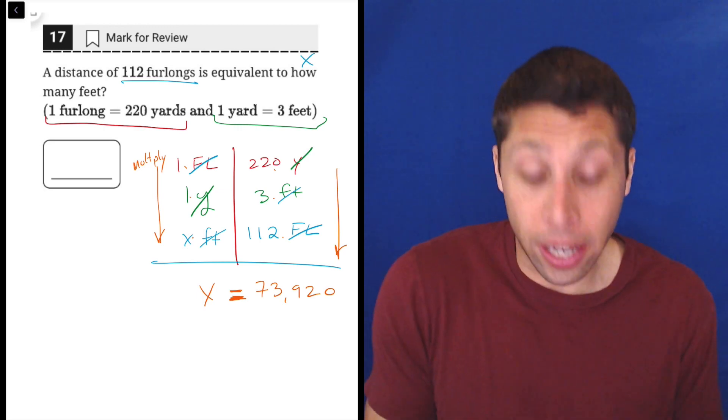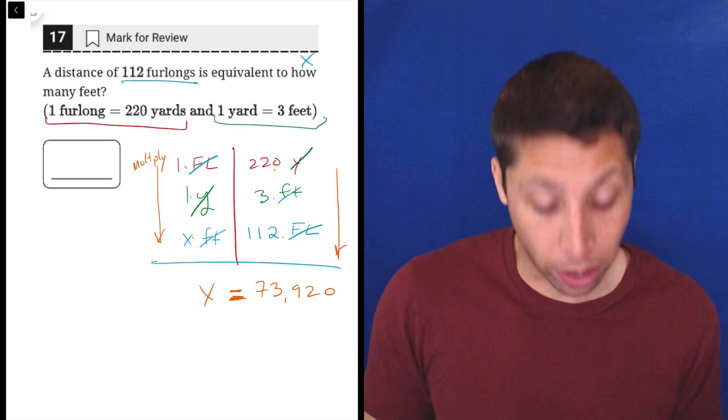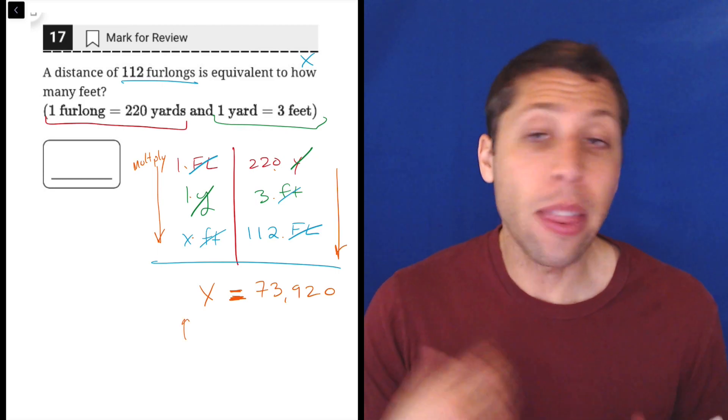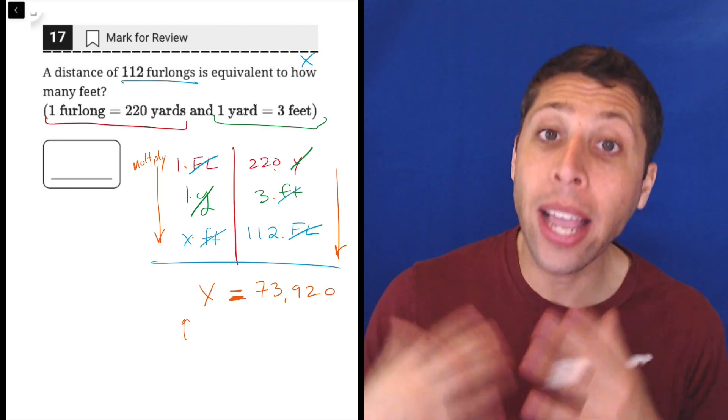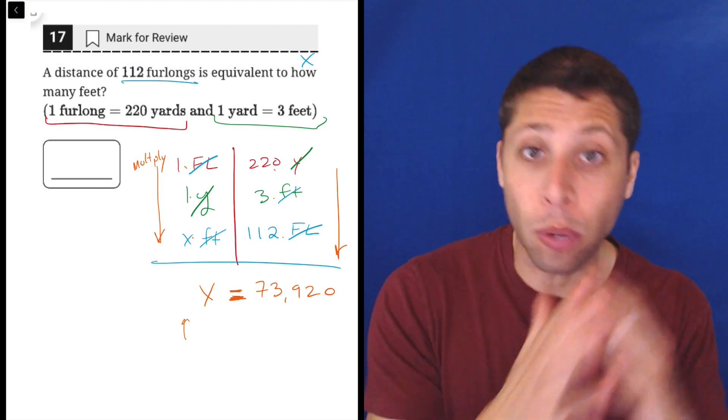And the last piece of this is there's an equal sign between those two columns. So in this case, I'm just done. X is equal to 73,920. Sometimes there'll be a number in front of that X, and then we just treat it like an equation and divide both sides by that number to make it go away and to get to where we are now.